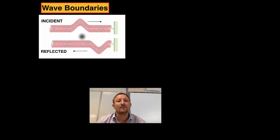Basically wave boundaries look at what happens when a wave actually hits an object. You can see here in the diagram we've got a wave which is generated by a slinky. That slinky could be water waves or it could be sound waves or it could even be light waves.